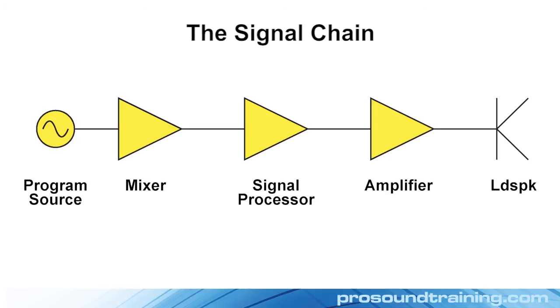I'll start with a signal chain that probably describes most systems these days. I've got a program source and a mixer, a signal processor, an amplifier, and a loudspeaker.